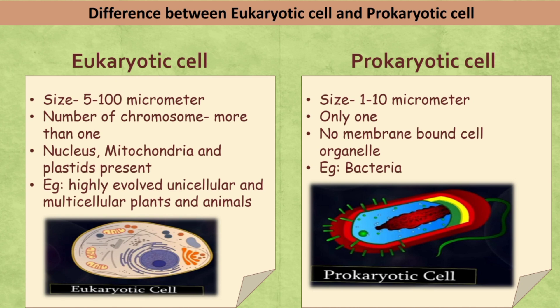Let's see a quick difference between eukaryotic and prokaryotic cells. Eukaryotes are organisms whose cells have a nucleus enclosed within a membrane. In prokaryotes, there is no membrane-bound nucleus. The size of eukaryotic cells is 5 to 100 micrometers, while prokaryotic cells are 1 to 10 micrometers. Prokaryotic cells have only one chromosome while eukaryotic cells have more than one. Nucleus, mitochondria, and plastids are present in eukaryotic cells, while prokaryotic cells have no membrane-bound organelles. Eukaryotic cells are found in highly evolved unicellular and multicellular plants and animals, while prokaryotic cells are found in bacteria.